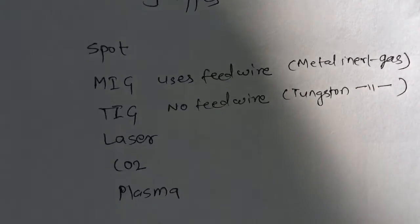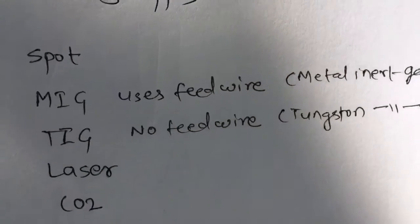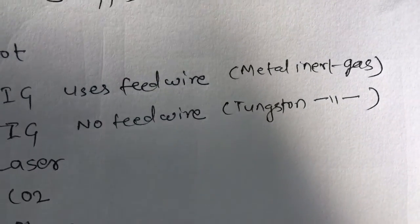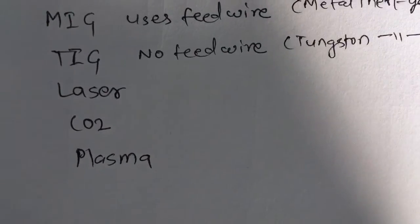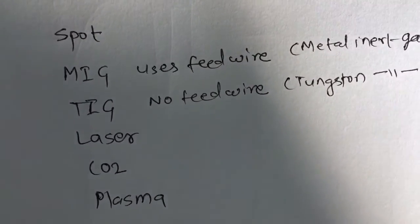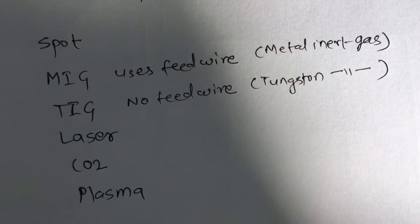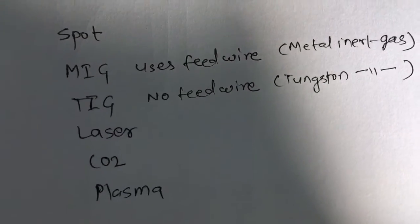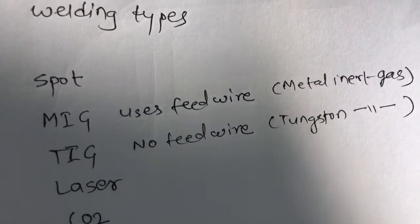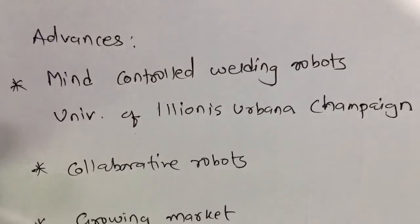In summary, robots are used across a variety of welding types: spot welding, MIG (metal inert gas) welding, TIG (tungsten inert gas) welding, laser welding, CO2 welding, and plasma welding. Laser welding is now extensively used, even being the subject of PhD theses. Welding is a very extensive area of robotic application, and as seen in the previous lecture, it is widely used in automotive applications.